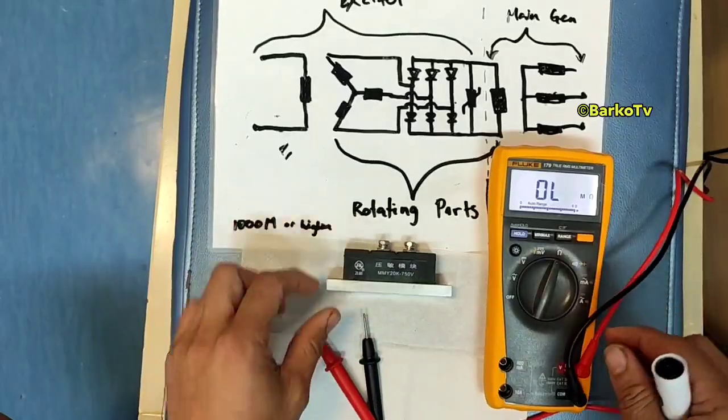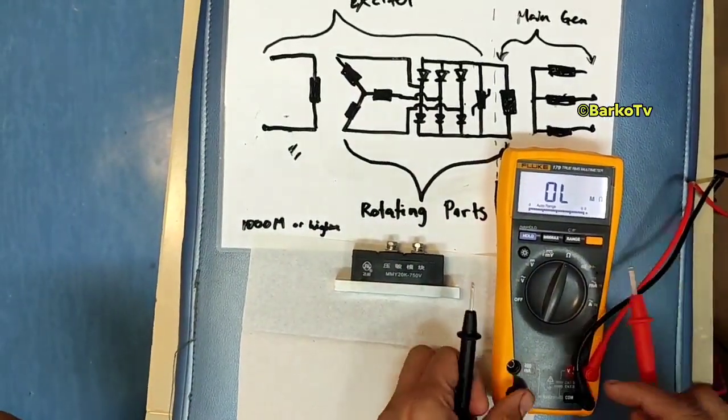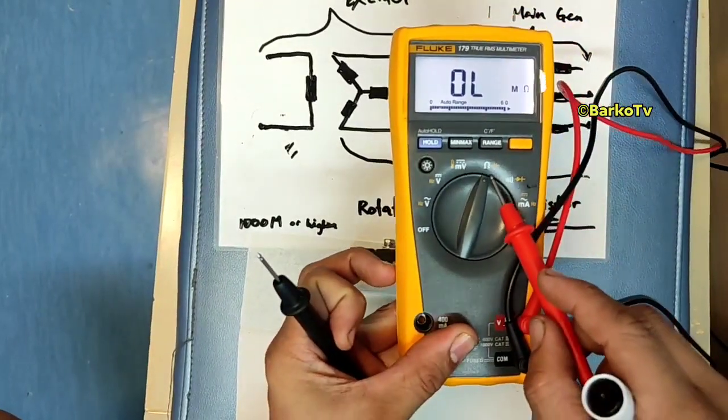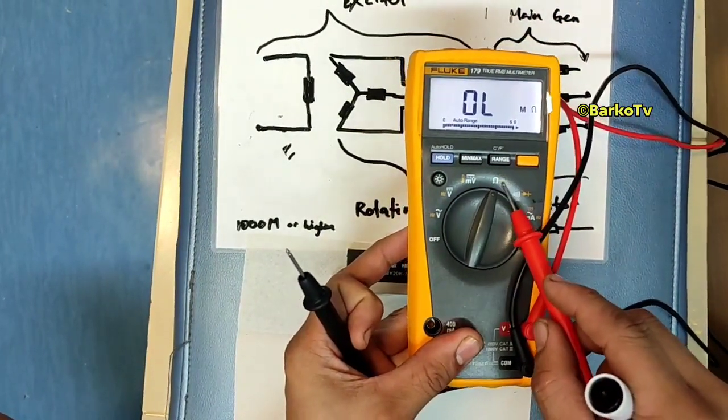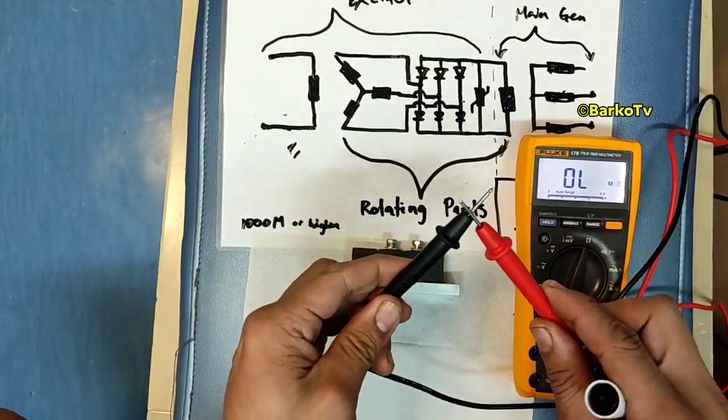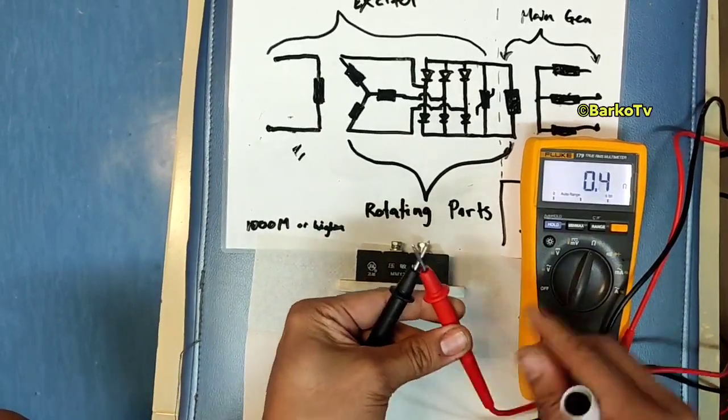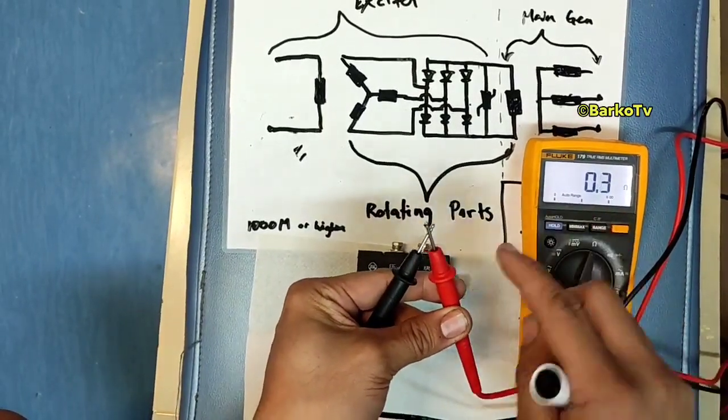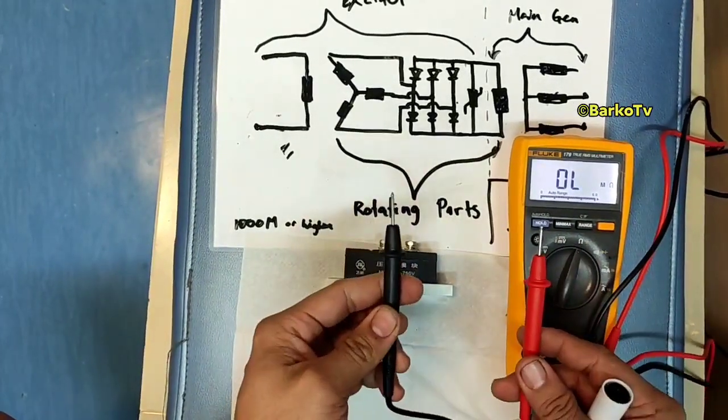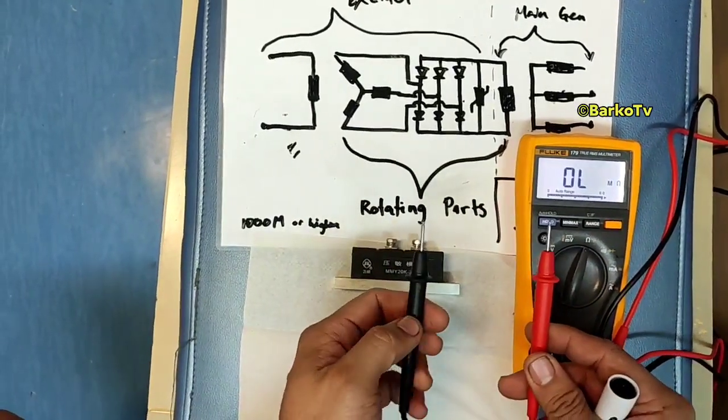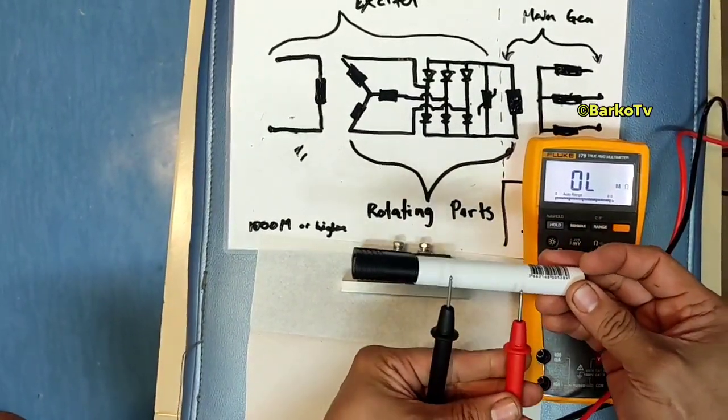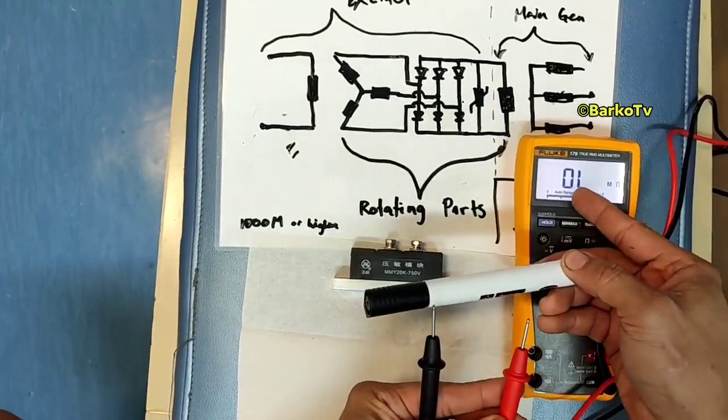And then this is our test step. We need to set the ohmmeter or resistance test ohmmeter. Two probes - this is the reading when I short these two probes. Then this is open. For example this, there is no continuity like this means open.